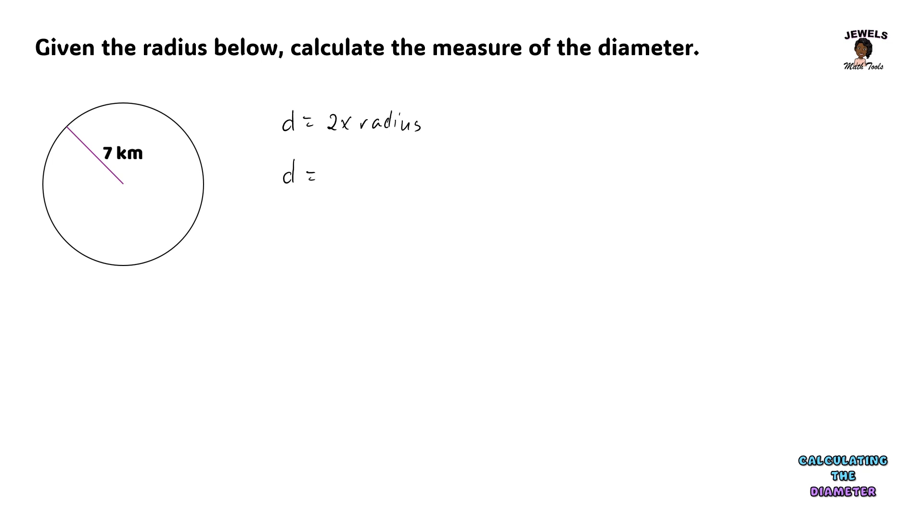So to find my diameter, I am going to take 2 and multiply it to 7 which will equal to 14 kilometers. So the measurement of my radius is 7 kilometers and my diameter will be twice that length which is 14 kilometers.